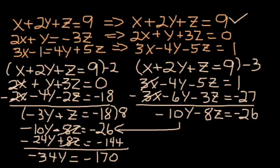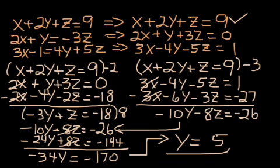And so I'm making some progress here. I'm actually down to one variable at this point. I just need to divide everything by negative 34. And so when I divide 170 by negative 34, that gives me negative 170 by negative 34. That gives me positive 5 as my solution for y. So I have one of the three variables solved.